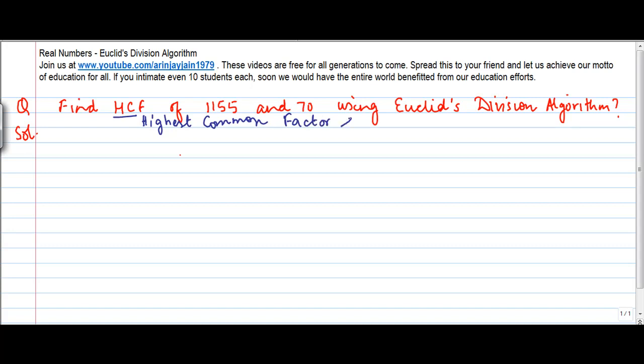By using Euclid's Division Algorithm, we are given two numbers: 1155 and 70.